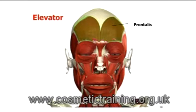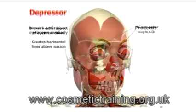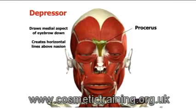Like a cadaver-like subject. You've got the corrugator supercilii and the depressor supercilii, which is more medial. It lowers and moves the eyebrows medially. Another depressor is the procerus muscle — a flat muscle in between your eyebrows. It draws the medial aspect of the eyebrow down and creates horizontal lines.